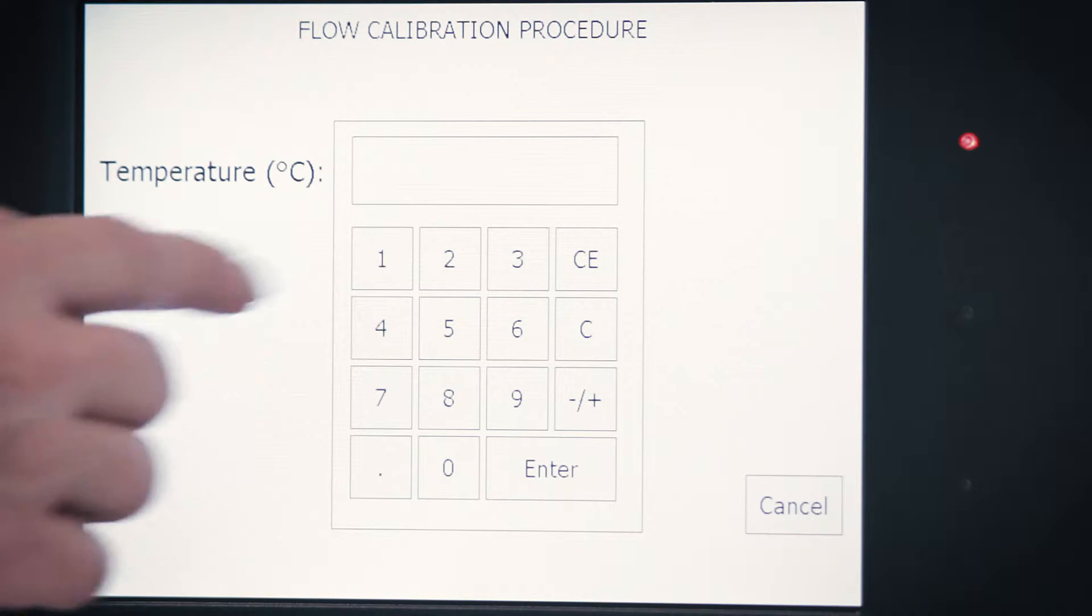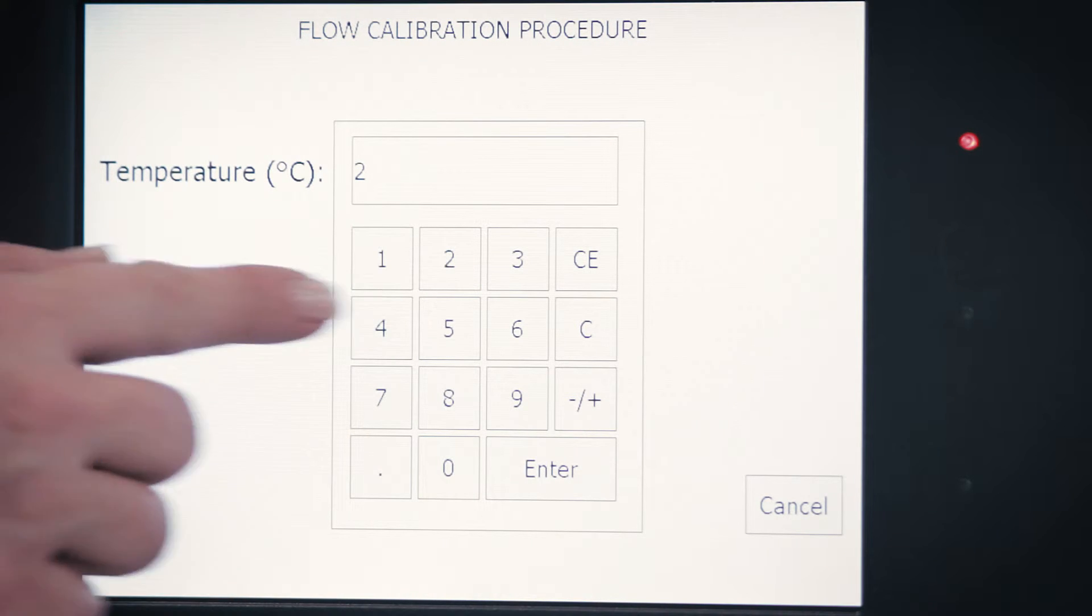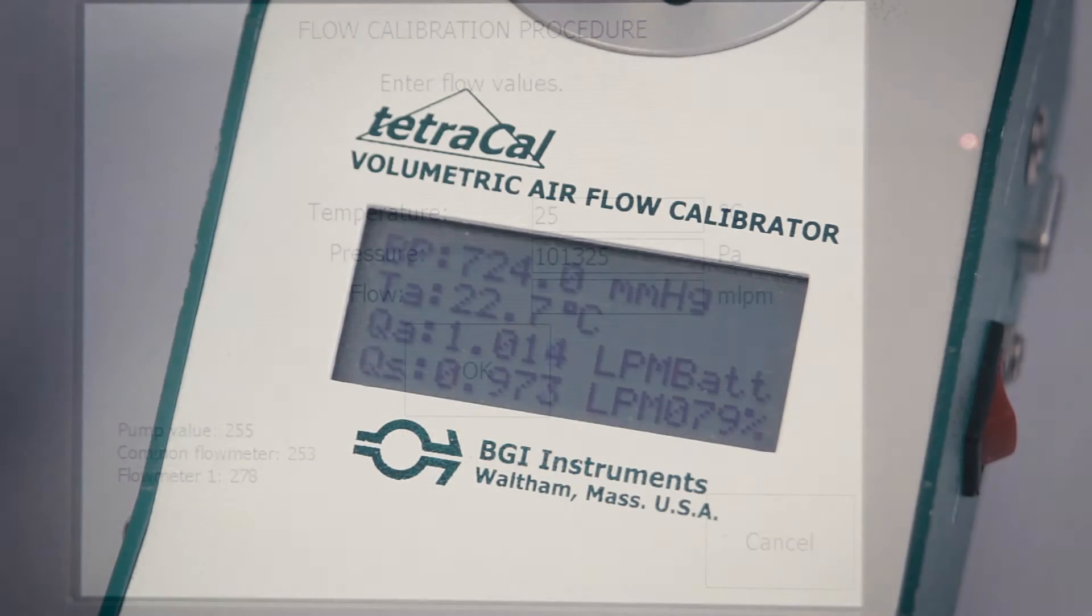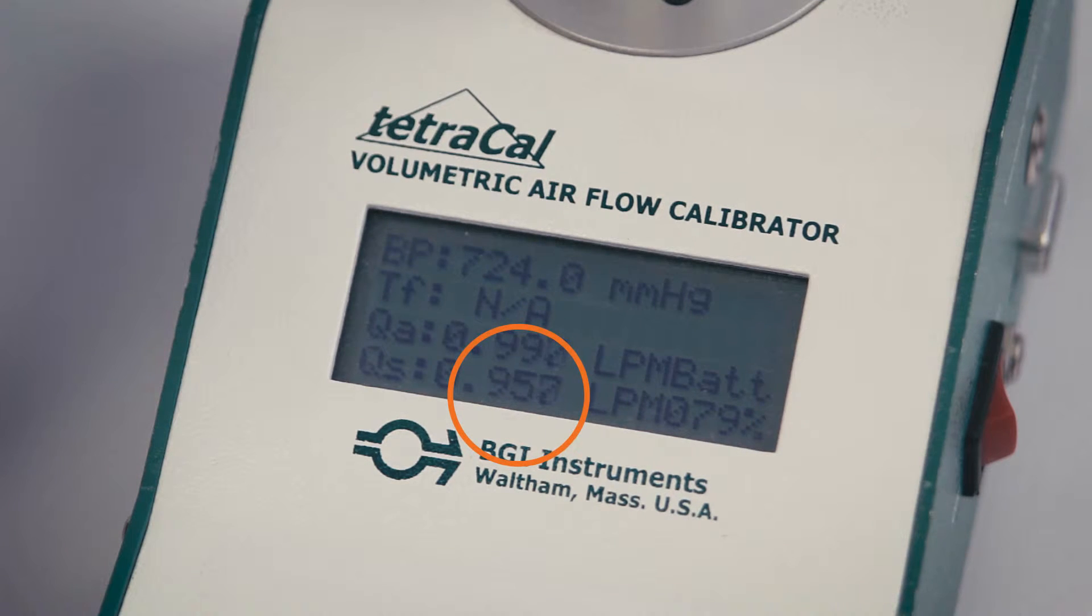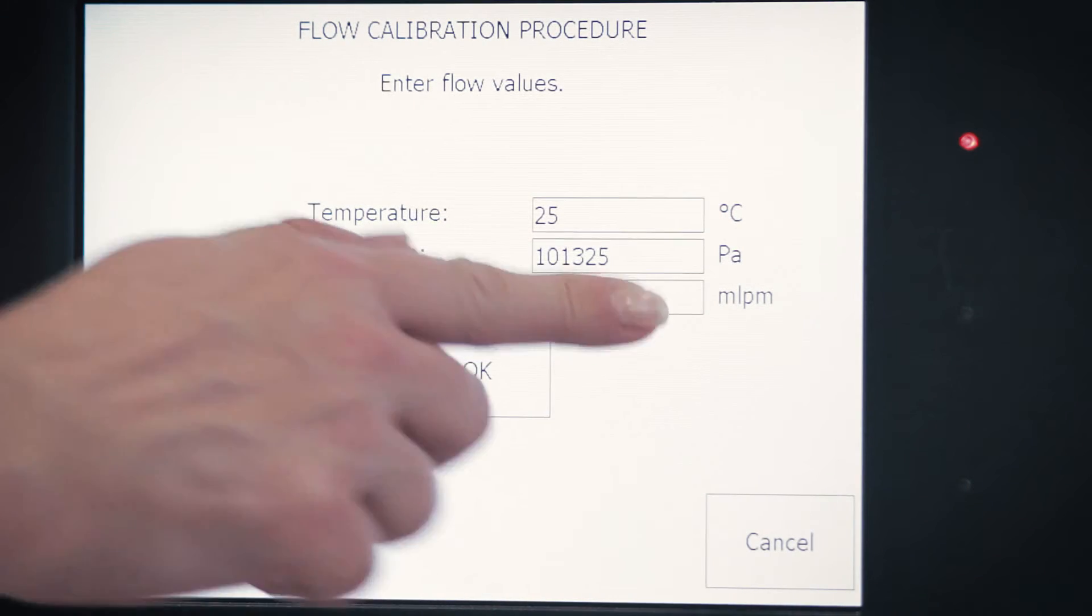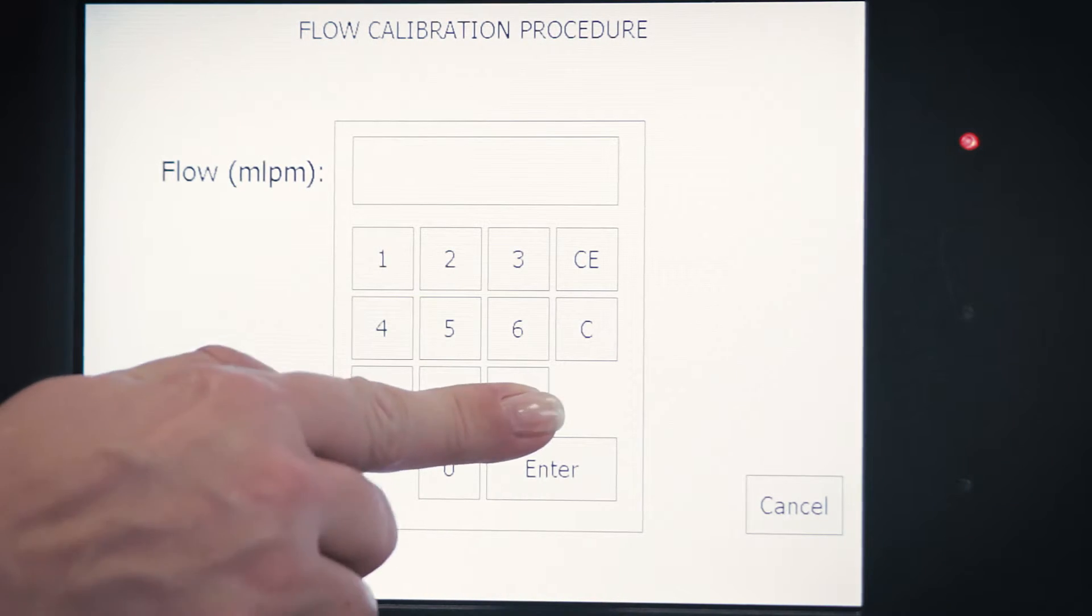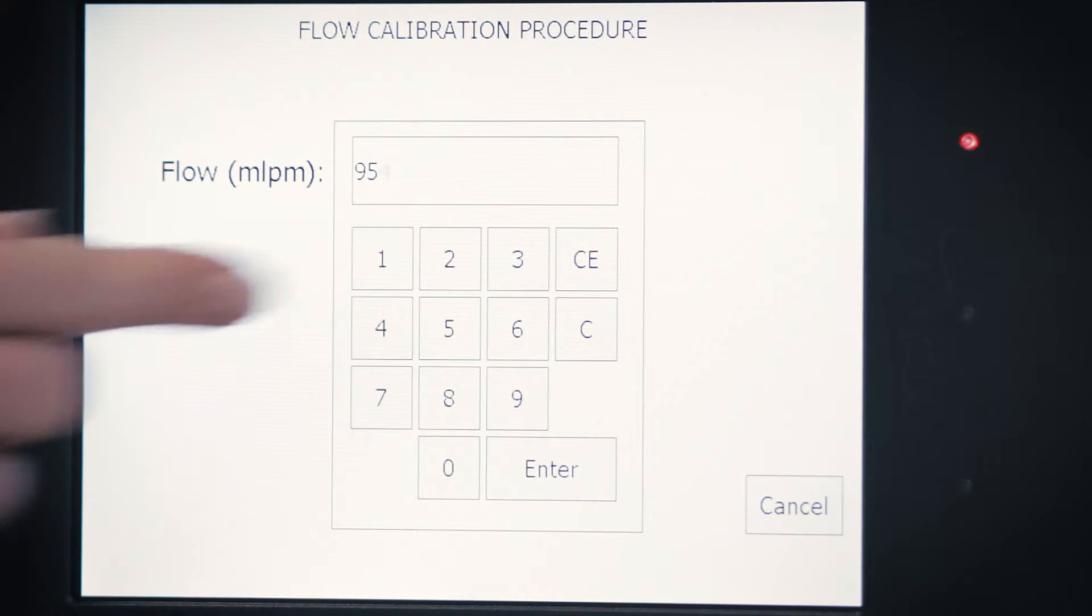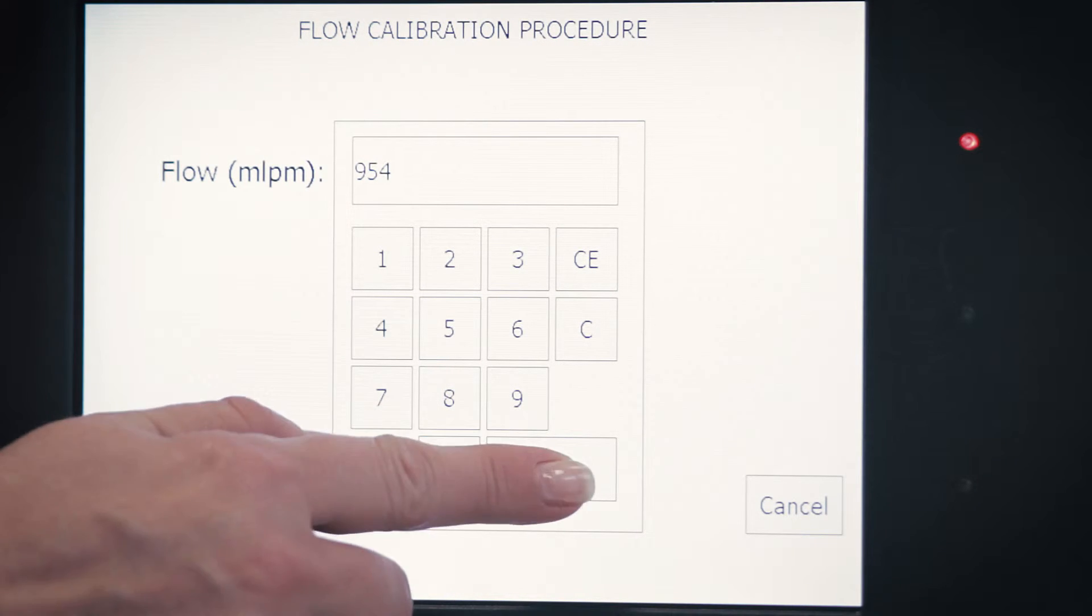Make sure that your flow readings are reported at standard conditions. Observe the flow on your external mass flow meter. Press the input box field and enter the flow from the external flow meter. Units are milliliters per minute. Confirm by pressing ENTER.